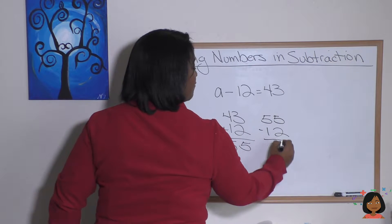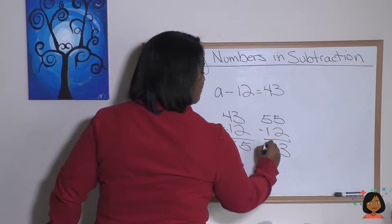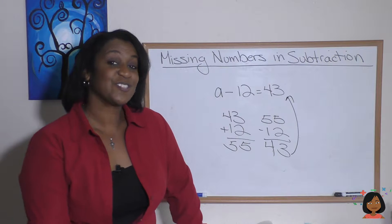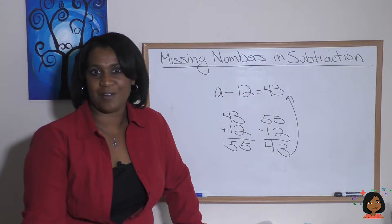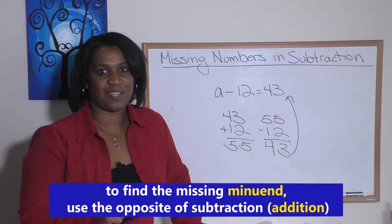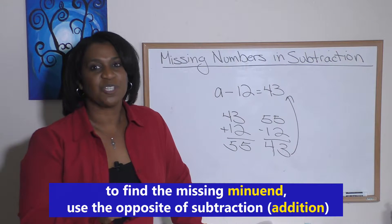And again, we always check. We put it back in: 55 minus 12. Five minus two is three, five minus one is four. And looky looky, it checks out! So the good news is it follows the same pattern. When you have a missing minuend in subtraction, do the opposite—addition—to find it.